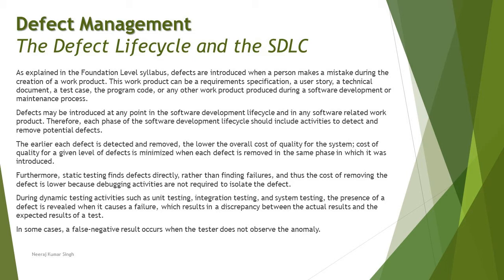There is no specific work item type where you can say requirements will have a lot of defects and architecture will not. Anyone can go wrong — humans are error-prone and we can go wrong at any point in time. The reason we say a defect can be introduced anywhere is to prepare ourselves to identify them as early as possible. Therefore, each phase of the software development life cycle should include activities to detect and remove potential defects.